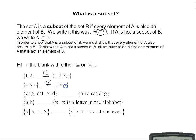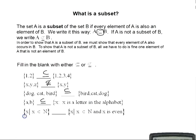The set {X, Y, Z} is not a subset of the set {X, Y} because Z is in the first set but not in the second. The set {dog, cat, bird} is a subset of {bird, cat, dog} because every element in the first set is also in the second. The set {A, B} is a subset of the set of all X such that X is a letter in the alphabet, since both A and B are letters in the alphabet.